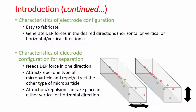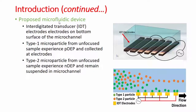Before deciding on an electrode configuration, we wanted one that is easy to fabricate but at the same time generates the desired DEP forces in the desired directions. For separation using dielectrophoresis, you need to be able to generate both positive DEP and negative DEP at the same time, allowing separation of two different types of particles either in the horizontal or vertical direction. Based on all this, we chose the well-known IDT configuration — the interdigitated electrode configuration.